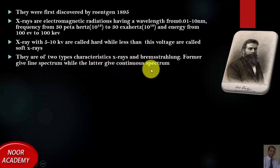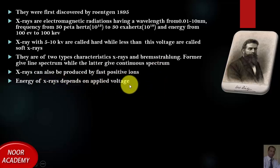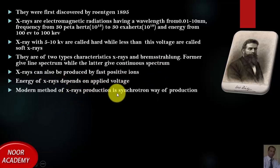X-rays can also be produced by fast positive ions. Energy of X-rays depends on applied voltage. Modern method of X-ray production is synchrotron way of production, which is actually the application of magnetic field to produce X-rays.